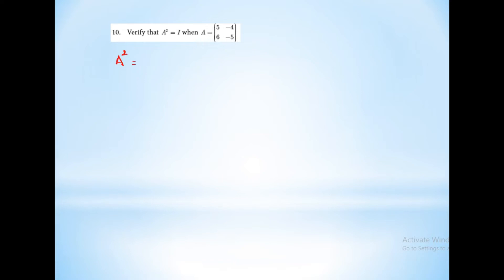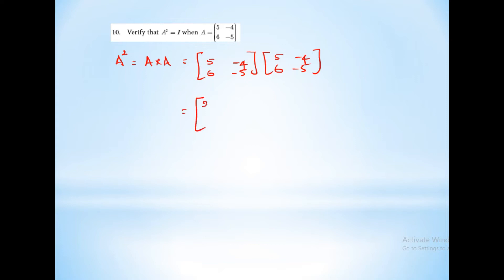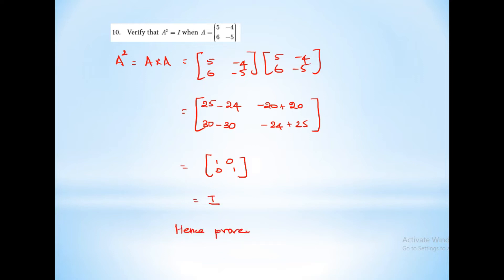Next sum: verify that A squared equals I, where A equals 5, minus 4, 6, minus 5. A squared equals A into A, which is 5, minus 4, 6, minus 5 multiplied by 5, minus 4, 6, minus 5. First row, first column: 25 minus 24 equals 1. First row, second column: minus 20 plus 20 equals 0. Second row, first column: 30 minus 30 equals 0. Second row, second column: minus 24 plus 25 equals 1. So A squared equals 1, 0, 0, 1 equals I. Hence proved.